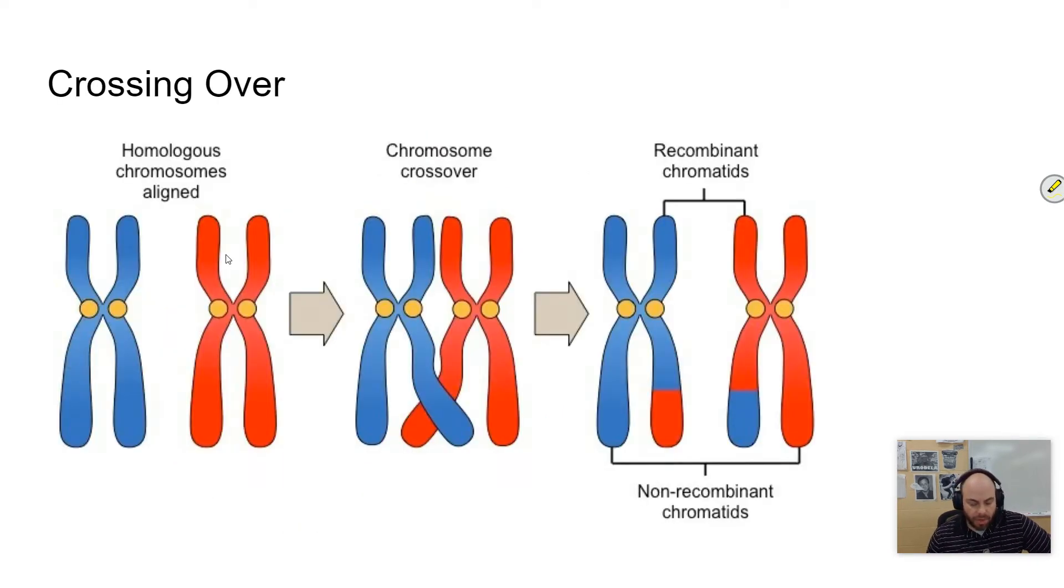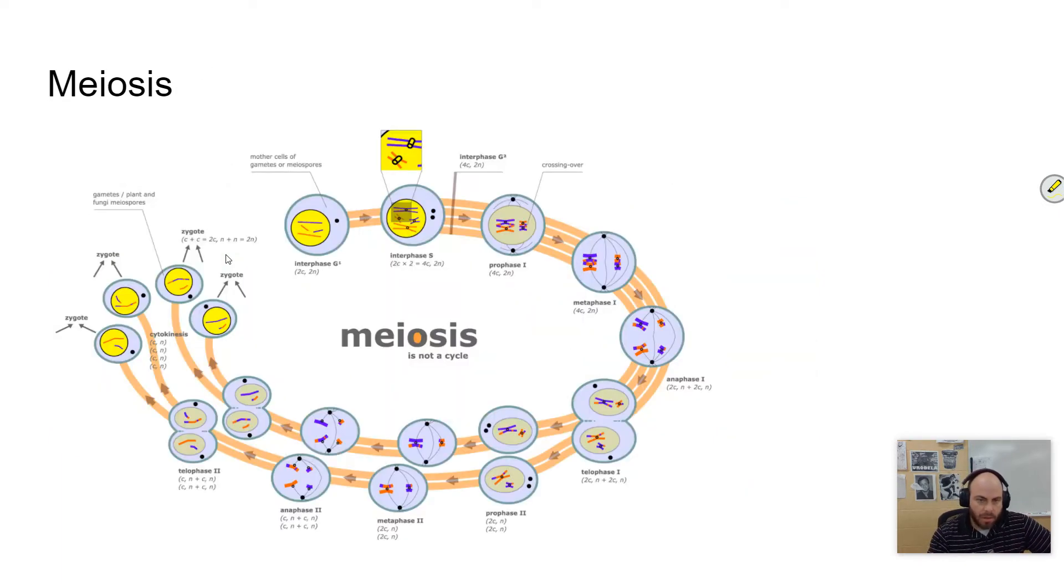It takes place with three main ideas. The first is during prophase one. During prophase one, we had homologous pairs that were lined up, and those homologous pairs will actually line up to form structures called tetrads. The reason they're called tetrads is because there's four pieces, four sister chromatids.